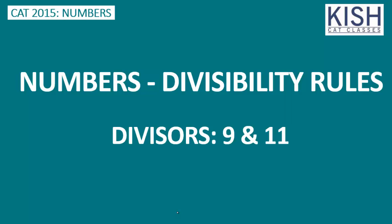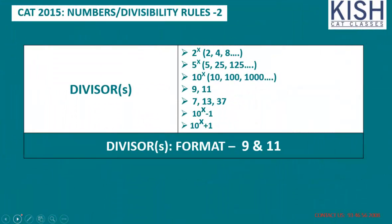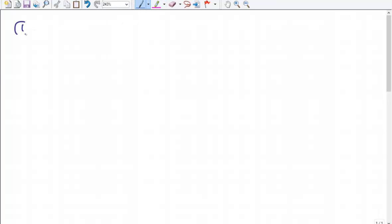Hi, welcome to the second session on divisibility rules. In this session we're going to discuss the divisors 9 and 11 — when we divide a number by 9 and 11, what could be the remainder, and how to find the remainder quite easily. In the previous session I discussed other divisors, so this session we're going to discuss divisors 9 and 11.